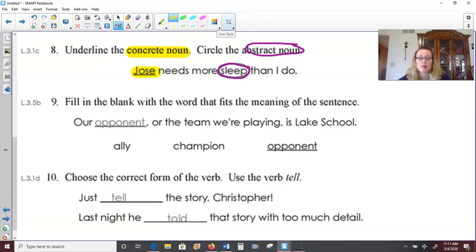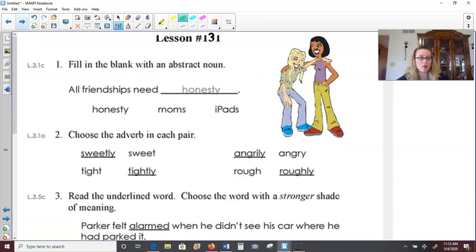On number nine, we need to fill in the blank with a word that fits the meaning of the sentence. Our blank or the team we're playing is lake school. So the team you're playing against, you call them your ally, your champion, or opponent. Well, it would be opponent. Our opponent or the team we're playing is lake school. And number ten, choose the correct form of the verb. Use the verb tell. Just tell the story, Christopher. And then last night, so this will be past tense, last night he told the story. No, we have to change it to told. This is an irregular verb. Last night he told that story with too much detail.